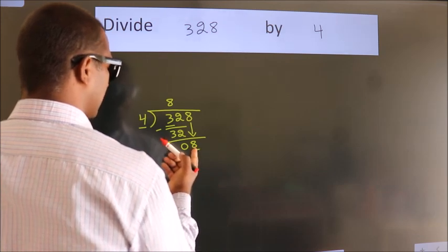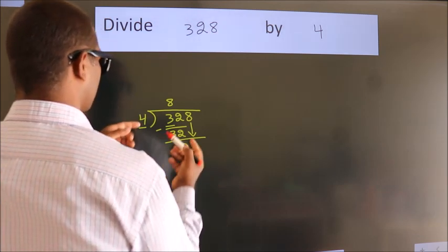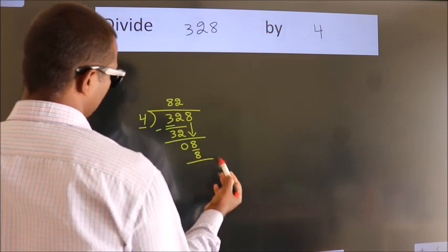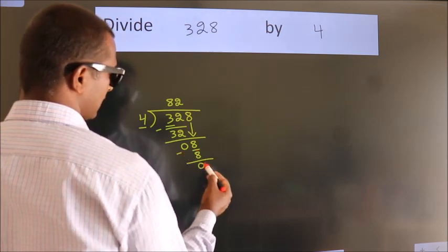When do we get 8? In 4 table, 4 2s, 8. Now we subtract. We get 0.